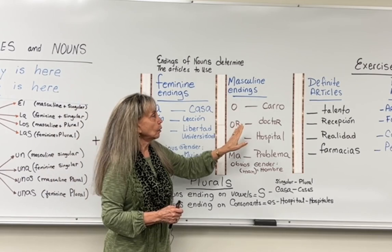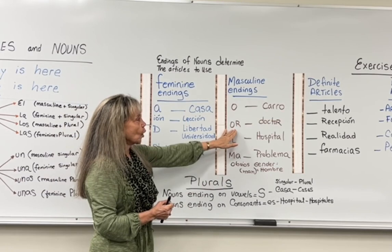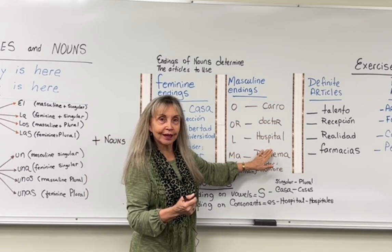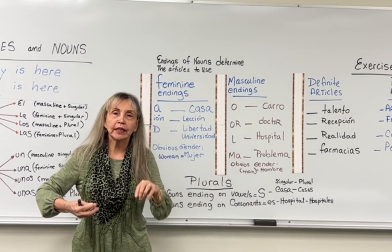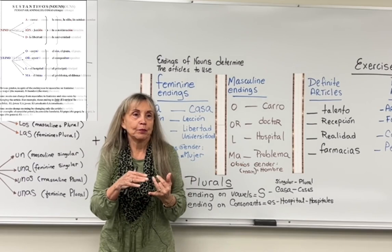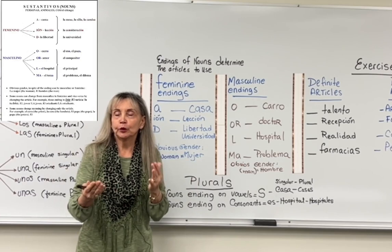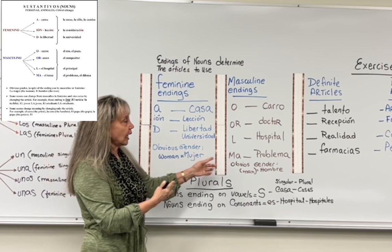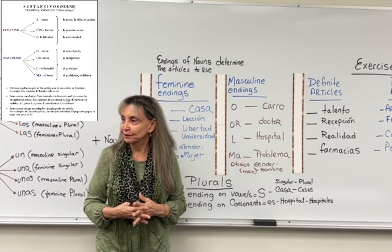Masculine endings include: -o, such as 'carro' (car); -or, such as 'doctor'; and -l, such as 'hospital.' There are also some irregular nouns that, even though they end with an A, they are masculine. Many of these are words ending in -ma, such as 'el problema,' 'el dilema,' 'el tema.' You hear 'el' — the masculine article — but in reality they end with an A, so these are kind of the exceptions.